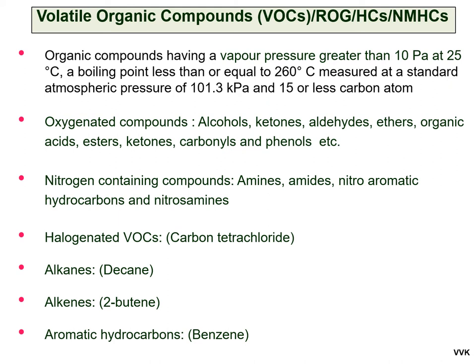VOCs are classified as oxygenated compounds like alcohols, ketones, aldehydes, ethers, organic acids, esters, carbonyls, and phenols. The second class is nitrogen-containing compounds including amines, amides, nitroaromatic hydrocarbons, and nitrosamines. Halogenated VOCs like carbon tetrachloride, alkanes like hexane and pentane, alkenes, and aromatic hydrocarbons like benzene are also included in this group.